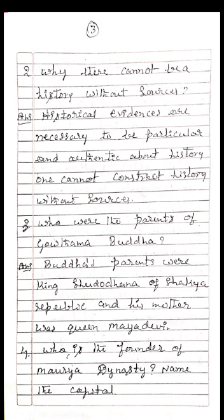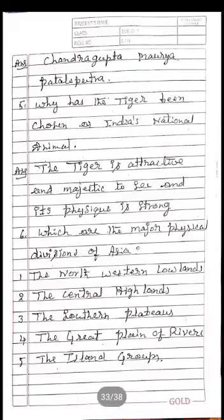Who are the parents of Gautama Buddha? His parents were King Suddhodana of the Shakya republic and his mother was Queen Mayadevi. Who is the founder of the Mauryan dynasty and name their capital? The founder of the Mauryan dynasty was Chandragupta Maurya and the capital was Pataliputra.